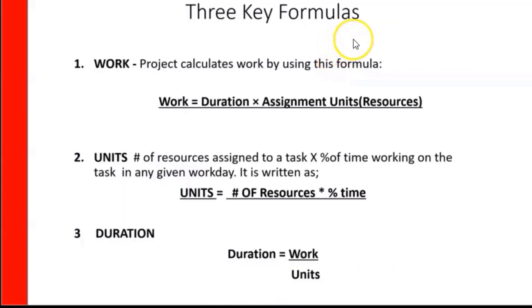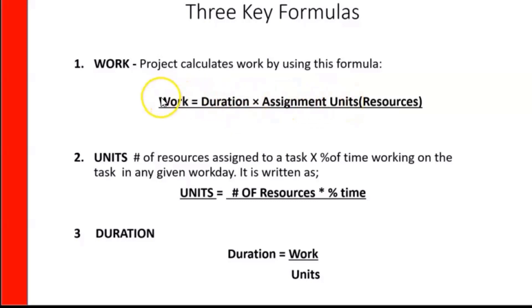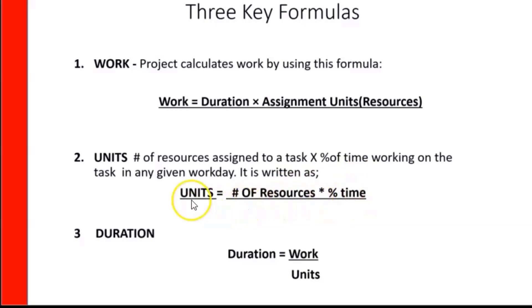There are three key formulas you have to learn when using MS Project. The first is work: Work equals Duration multiplied by Assignment Units. So if your duration is one day and you have one person assigned 100% of the time, your work is going to be eight hours — one day by eight hours. Units equals number of resources by percentage of time, so one resource at 100% gives 100% units. Duration equals Work divided by Units — if your work is eight hours and your units are 100%, the duration is going to be one day.